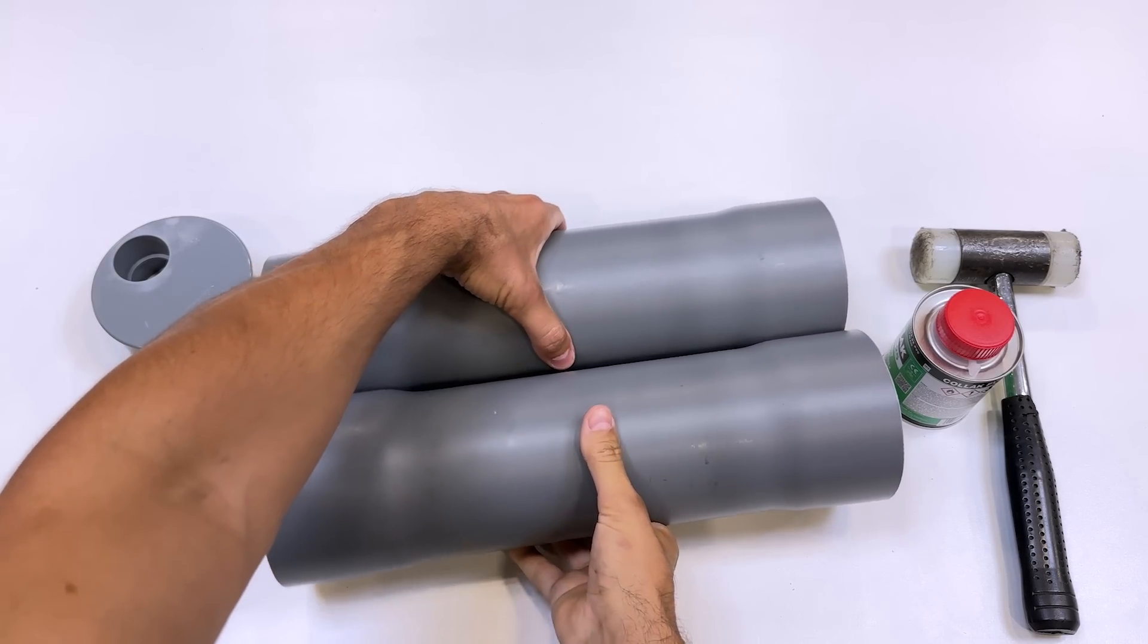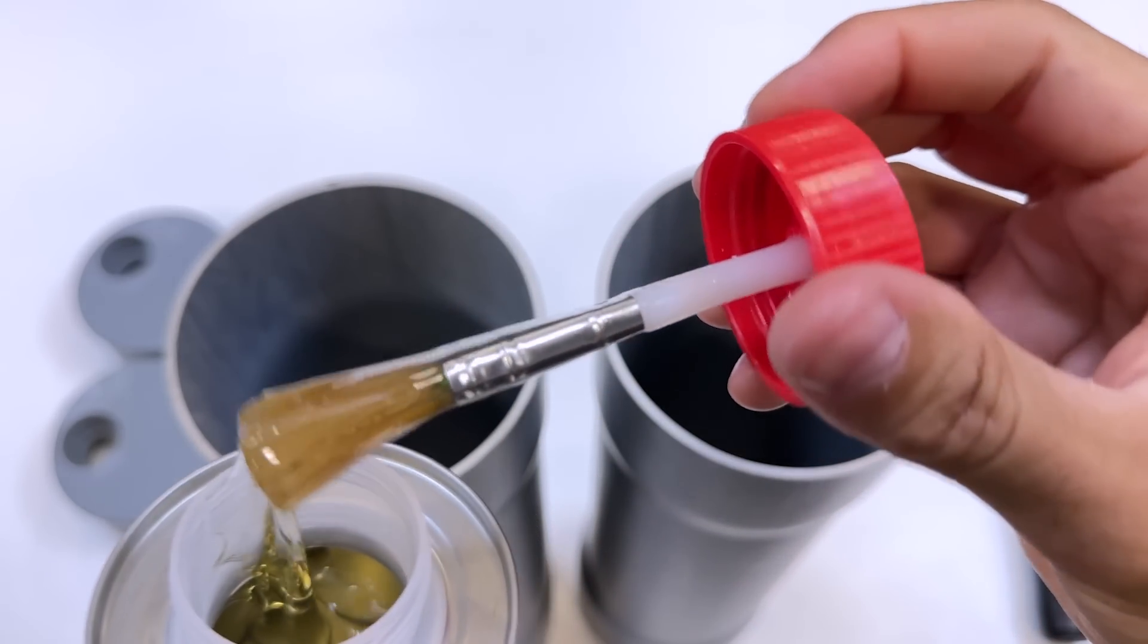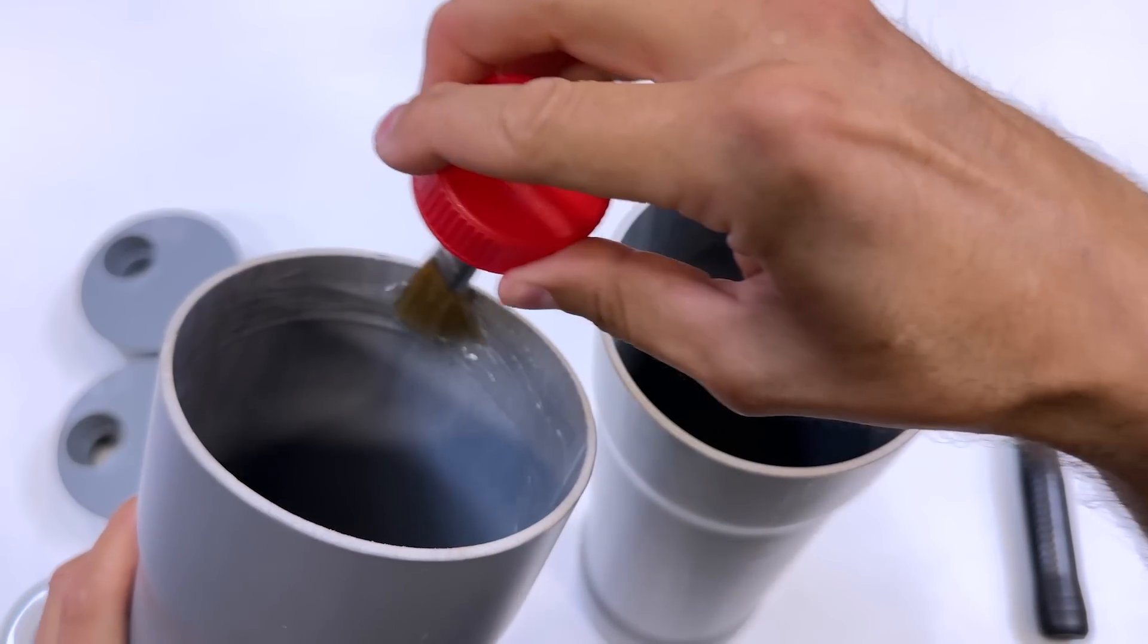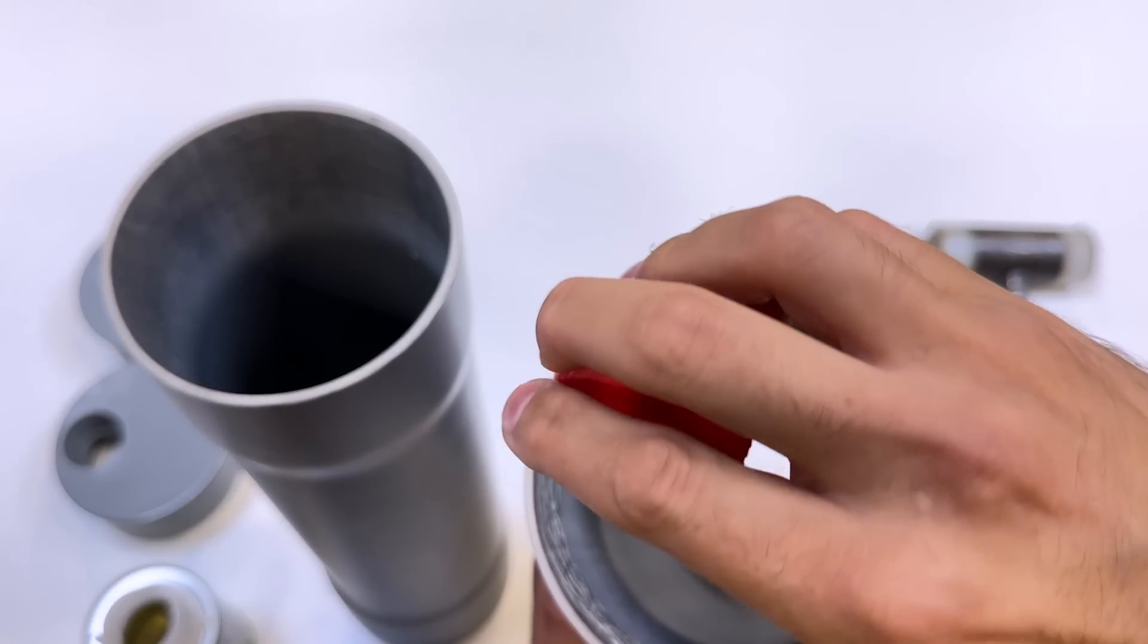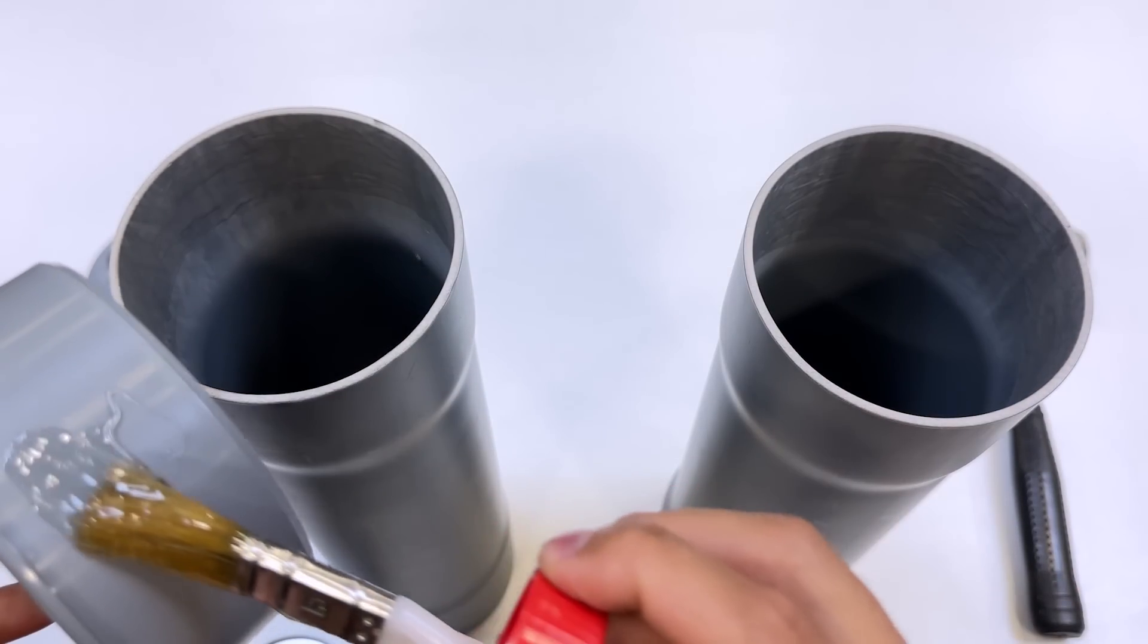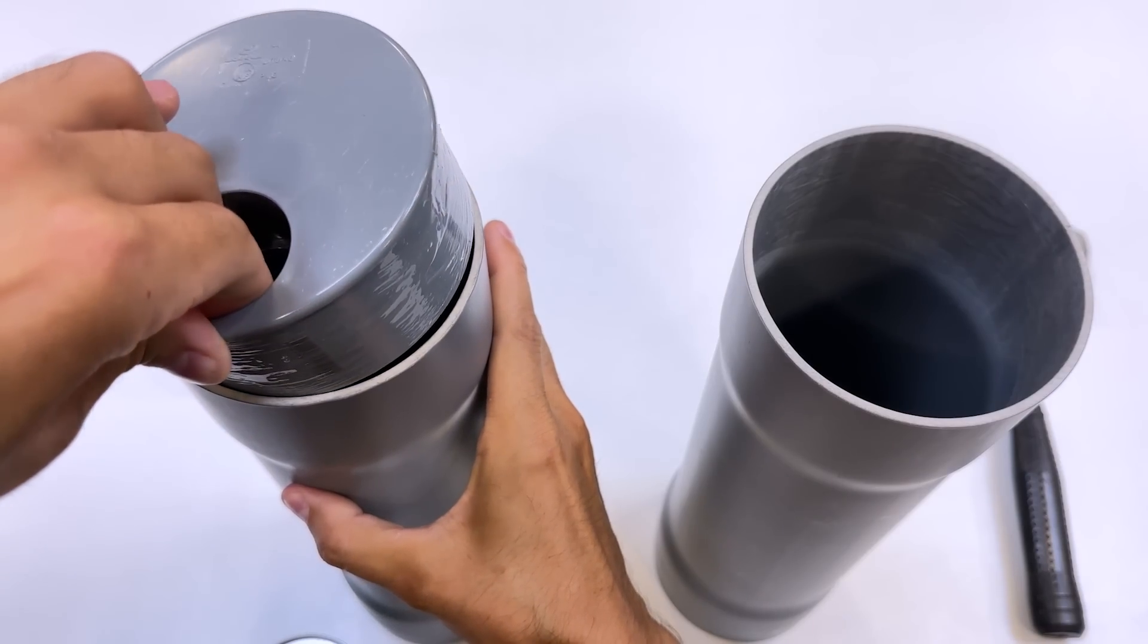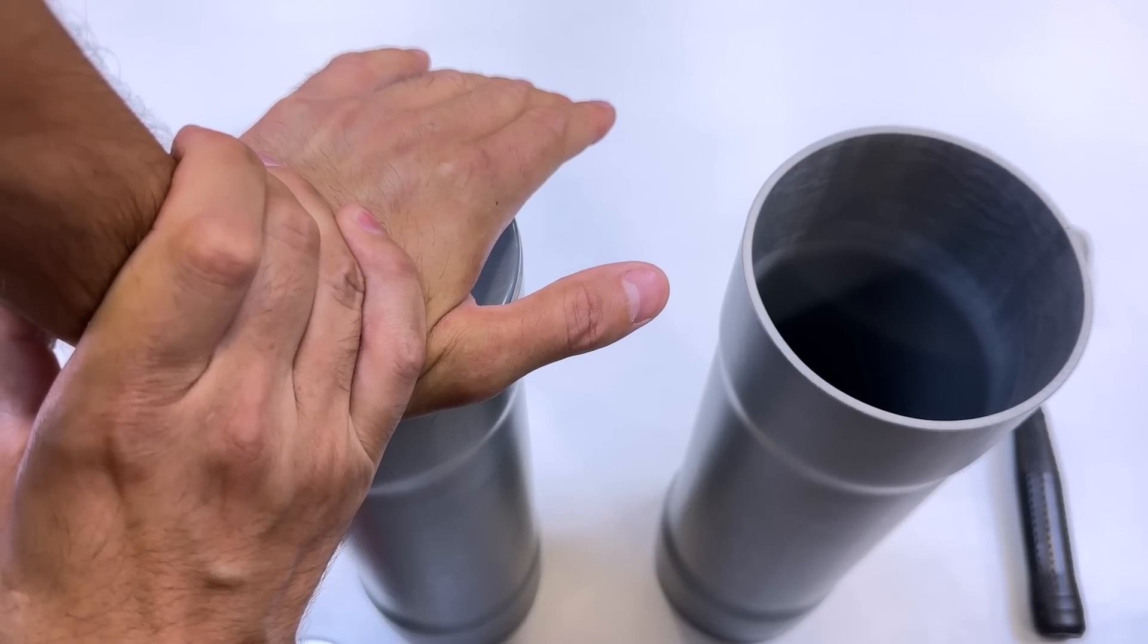Now we'll begin gluing all the elements. To do this, we'll use high-pressure PVC adhesive. You have the link in the description. In the two large tubes, we'll thoroughly soak the inside with adhesive. And also the outside of the caps we're going to put on. And we'll glue them this way, applying some pressure if necessary.